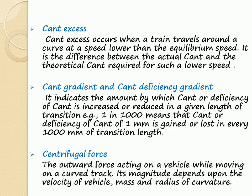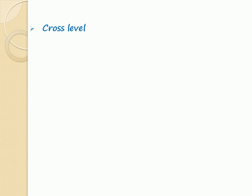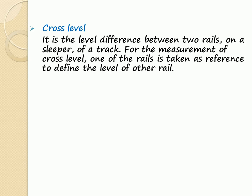Centrifugal Force: The outward force acting on a vehicle while moving on a curved track; its magnitude depends upon the velocity of the vehicle, mass, and radius of curvature. Cross Level: It is the level difference between the two rails on a sleeper of a track. For the measurement of cross level, one of the rails is taken as reference to define the level of the other rail.